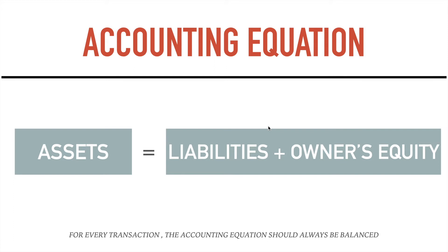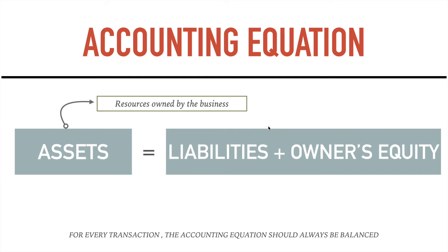So magkakaroon tayo ng short preview kung ano nga ba yung asset, liabilities, at owner's equity para mas madali nating maintindihan. Ano nga ba si asset? It is the resource, or these are the resources owned by the business — ito yung mga ari-arian na pag-aari ng business. It could be cash, it could be buildings, it could be land, it could be equipment, or anything na ang may-ari ay yung business.